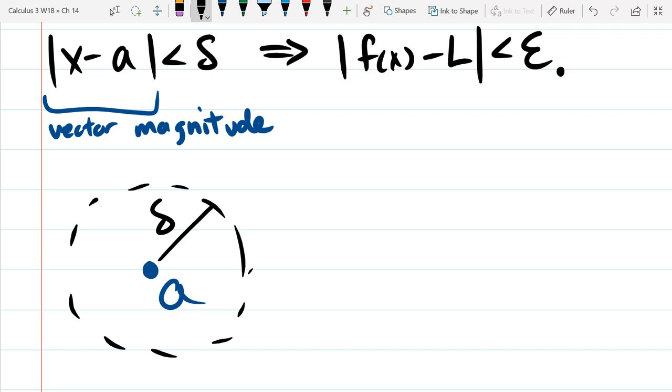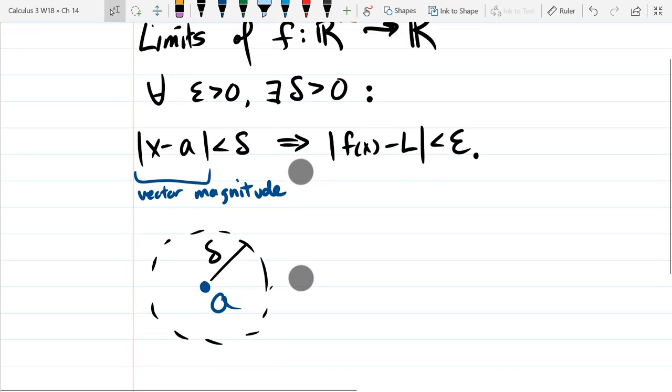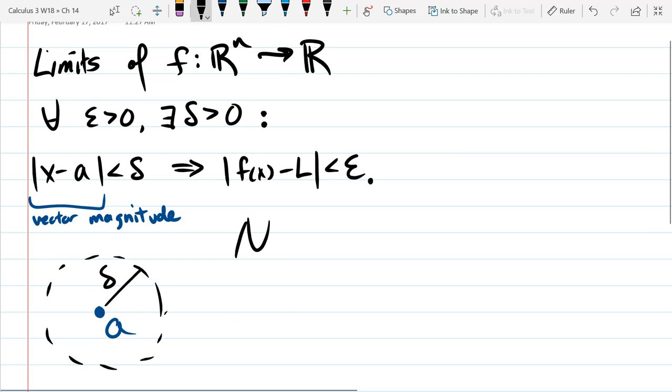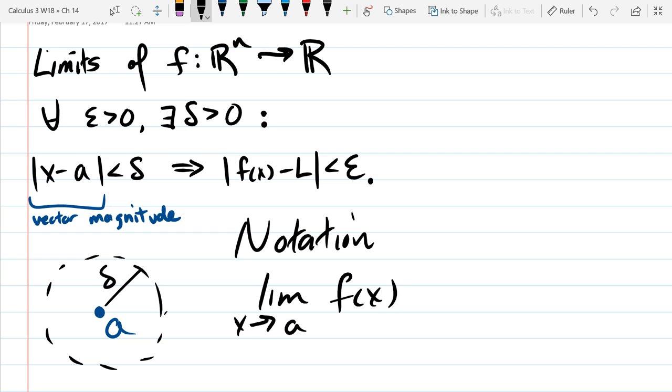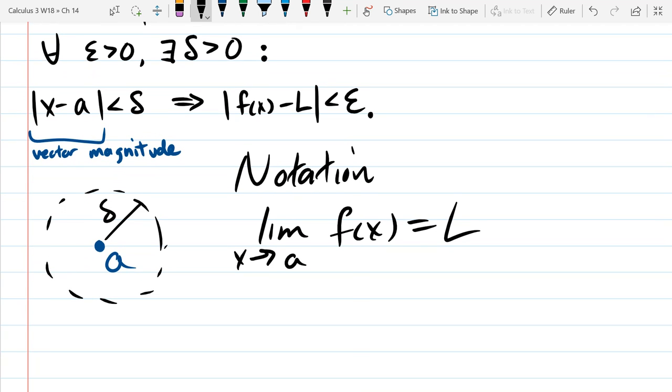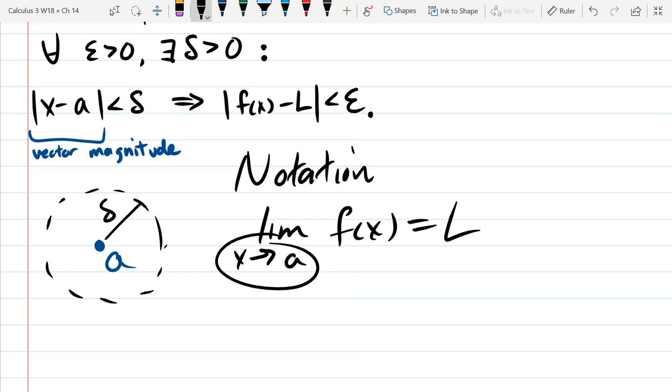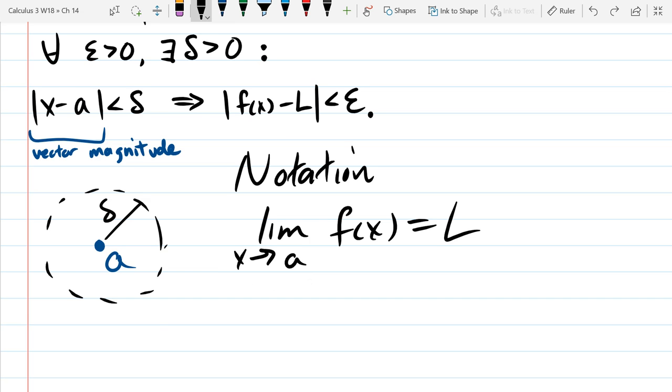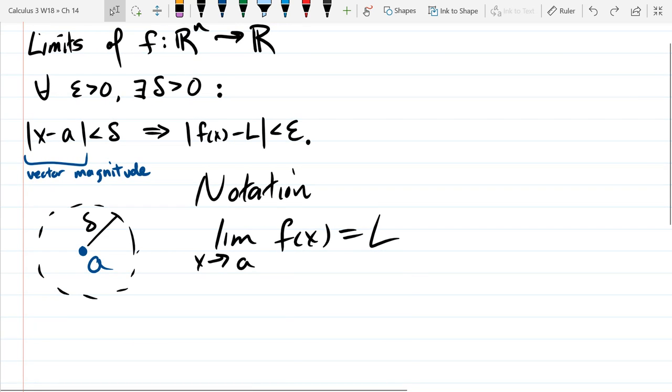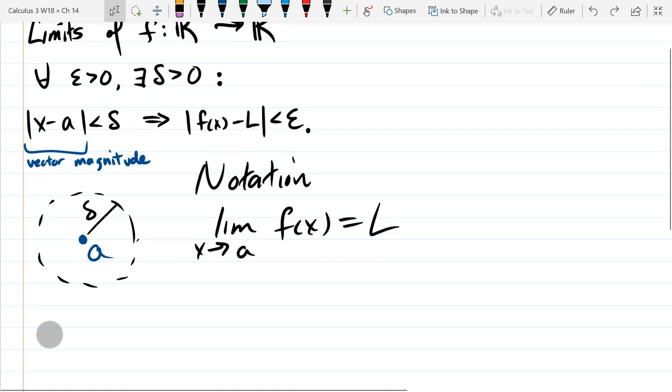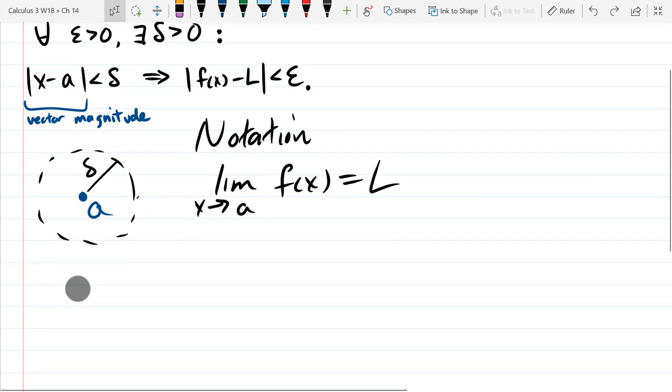So I'm going to use the word output. So the output is very close to L. So if we take inputs from close to a, we get outputs close to L. That's all this is saying. Whatever number we said was a limit. Oh, so this is a definition of a limit. Our notation for writing this is what we've been using for a long time. Lim x approaches a. L is this number right here. And now remember, the only difference is x and a are vectors.